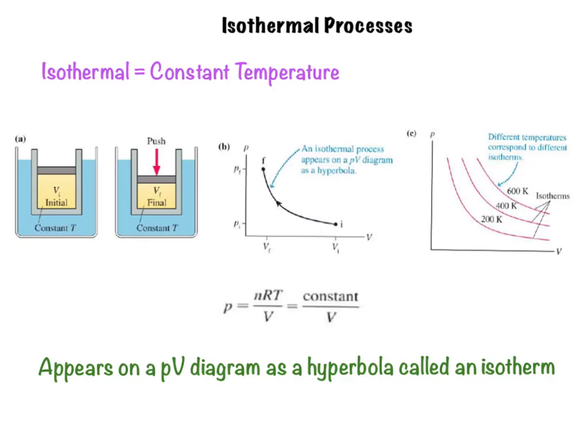Now the graph of an isothermal process is called an isotherm. This isotherm shown here shows us that the hyperbola of the PV graph depends on the value of the temperature. If we use a higher constant temperature for the process, the isotherm will move further away from the origin of the PV diagram. So this figure is showing us three isotherms for this process at three different temperatures. A gas undergoing an isothermal process will move along an isotherm for the appropriate temperature.